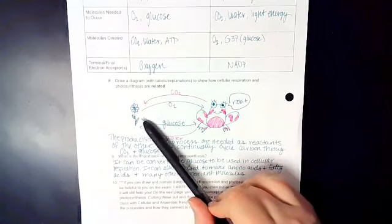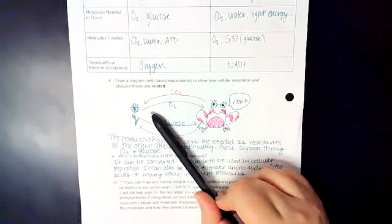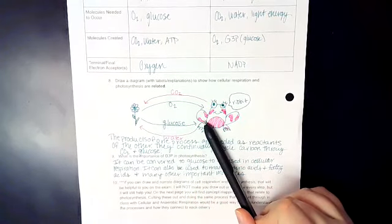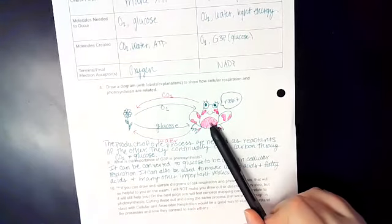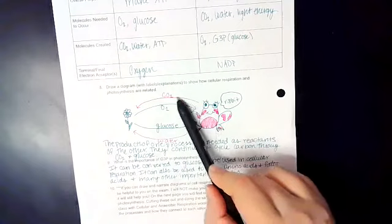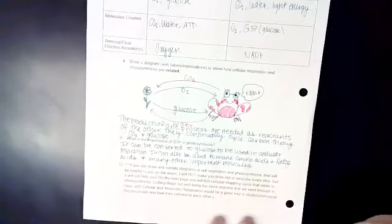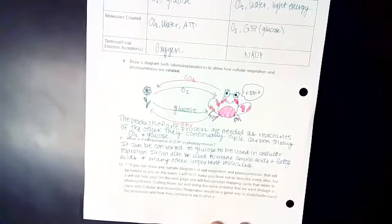So as you can see, photosynthesis, the products of photosynthesis are the reactants that cellular respiration needs. So photosynthesis gives us oxygen and glucose, and cellular respiration gives us water and carbon dioxide. So the products of one process are needed as the reactants of the other.